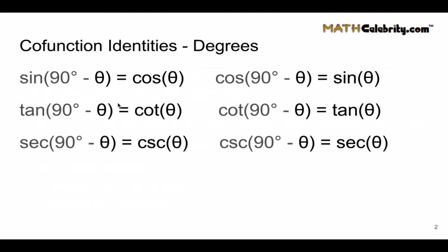If we flip those two, we get the cotangent of 90 minus theta equals the tangent of theta. Finally, our third grouping: secant of 90 minus theta equals cosecant of theta, and flipping these two we get our sixth co-function identity, which is cosecant of 90 degrees minus theta equals secant of theta.